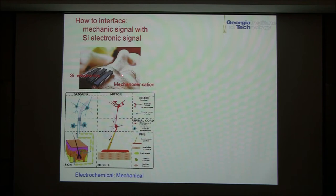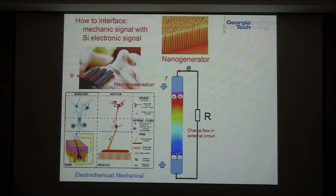How do we interface them? Silicon electronics work on semiconductor physics. Humans work on mechanical sensation. When you interface them, how do you do that?